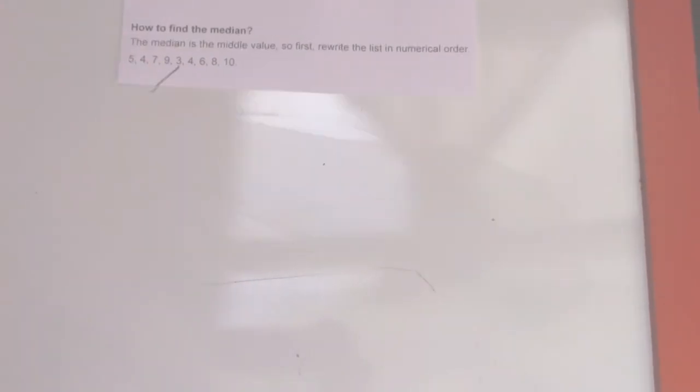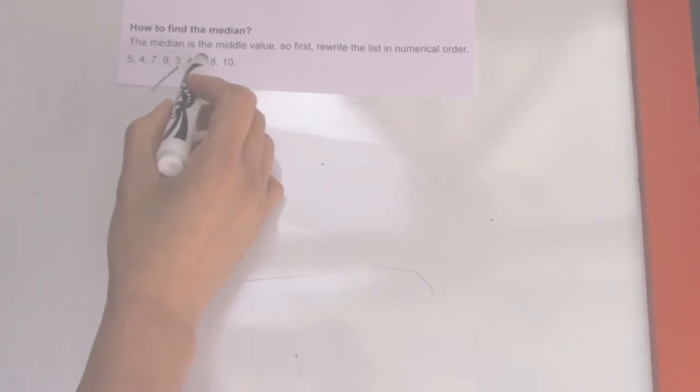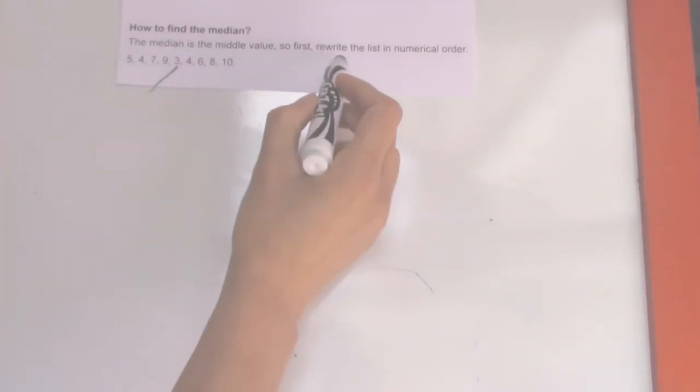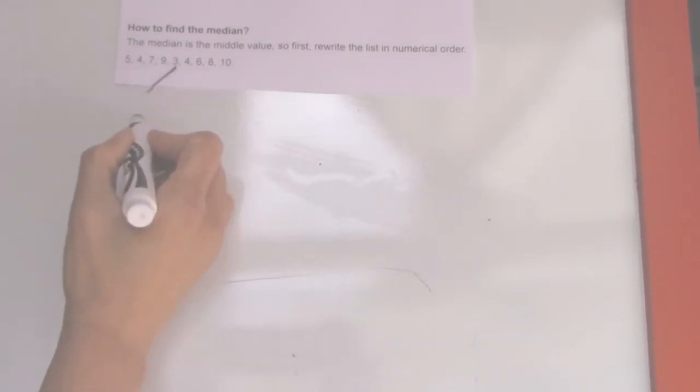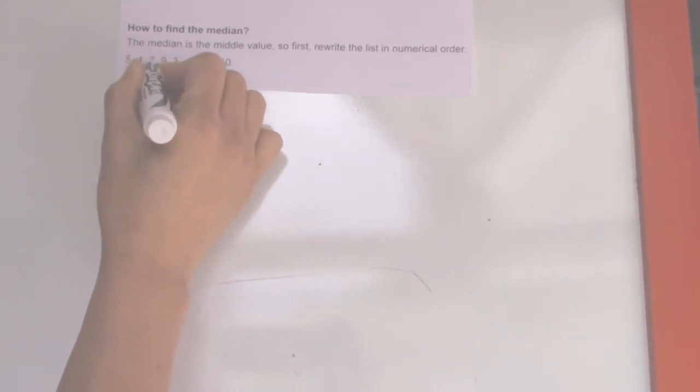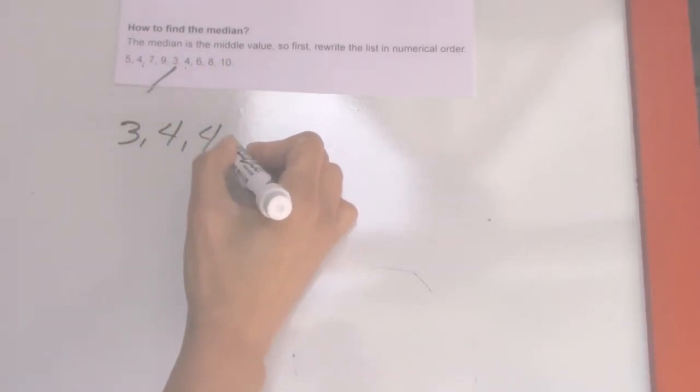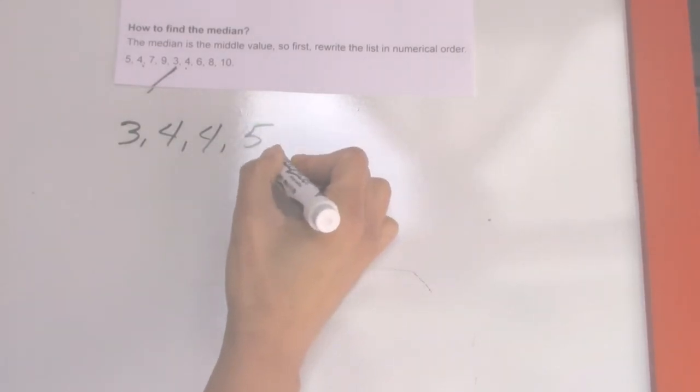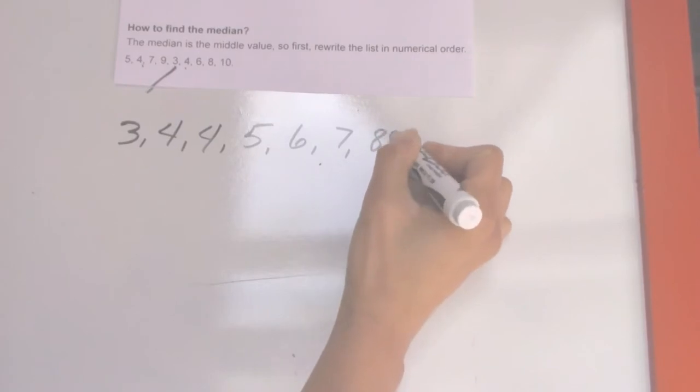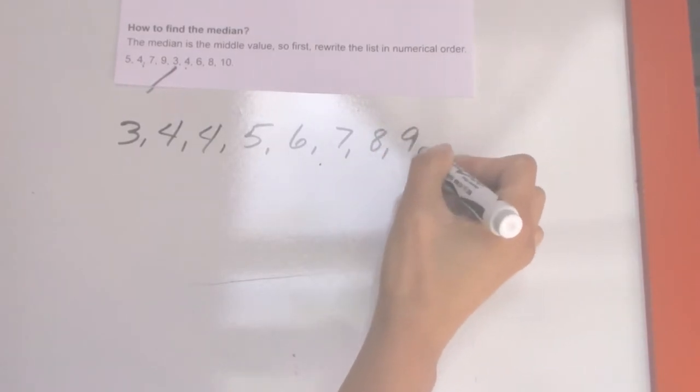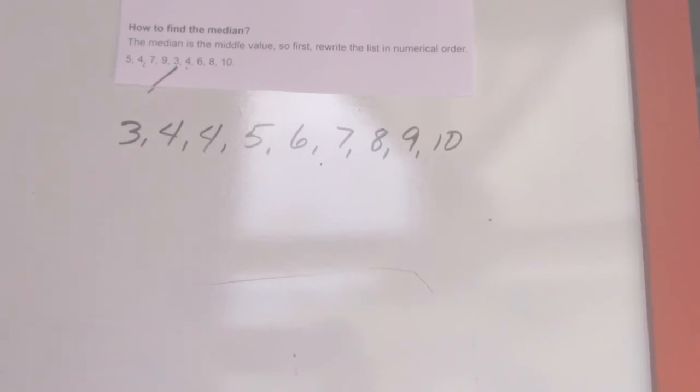Next, how to find the median? The median is the middle value. So first, rewrite the list in numerical order: 3, 4, 4, 5, 6, 7, 8, 9, 10. So how do you find the median in this group of numbers?